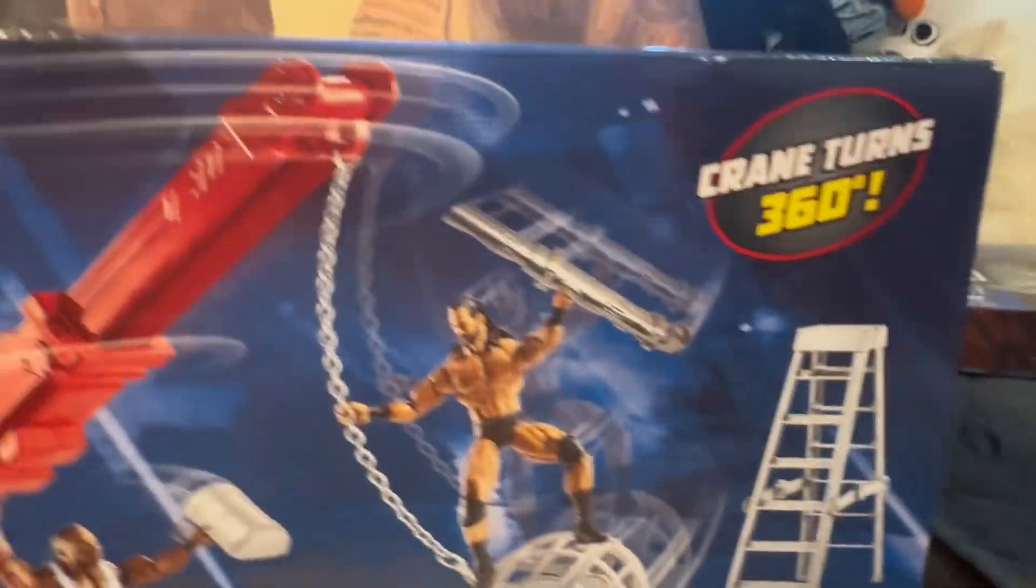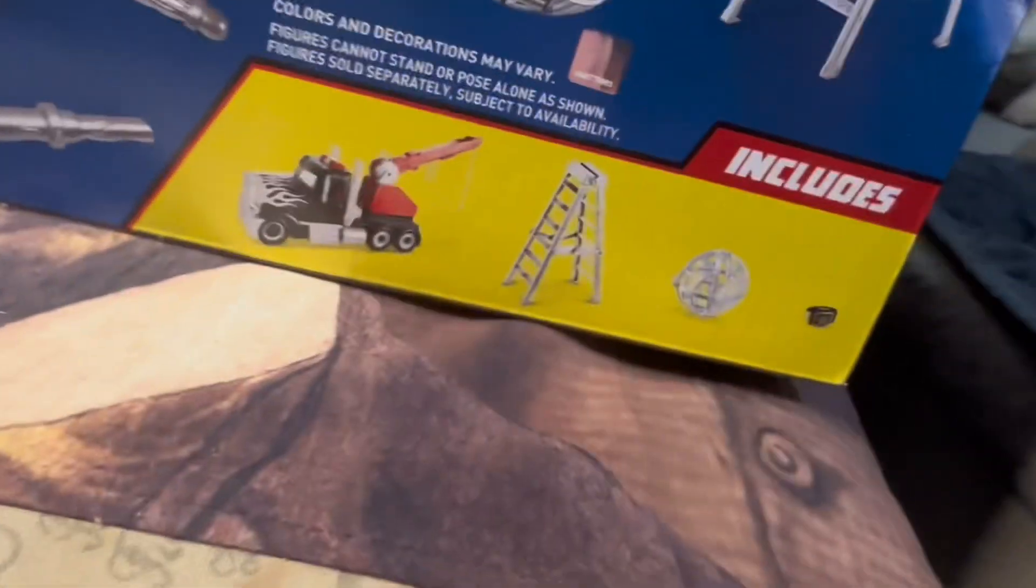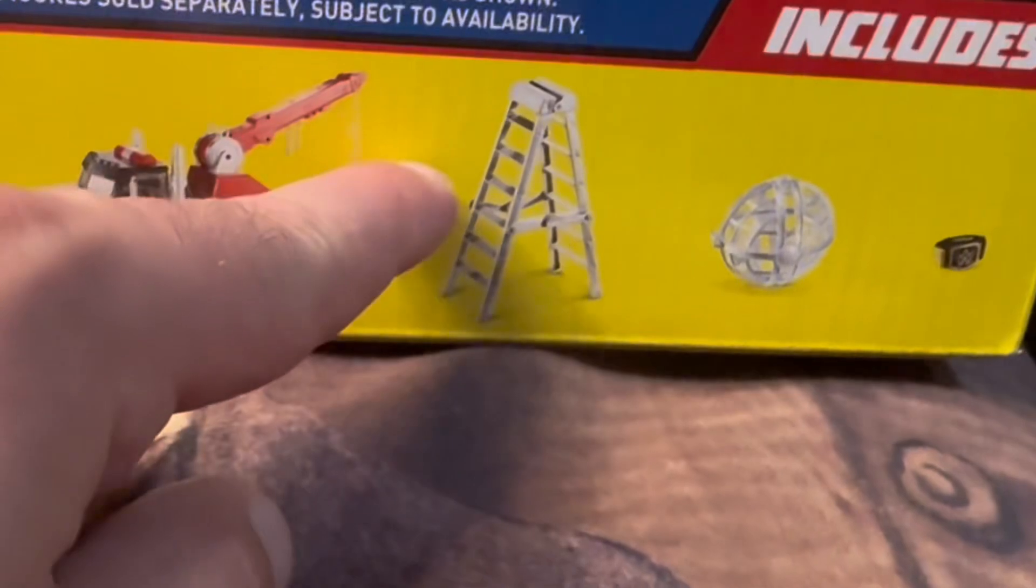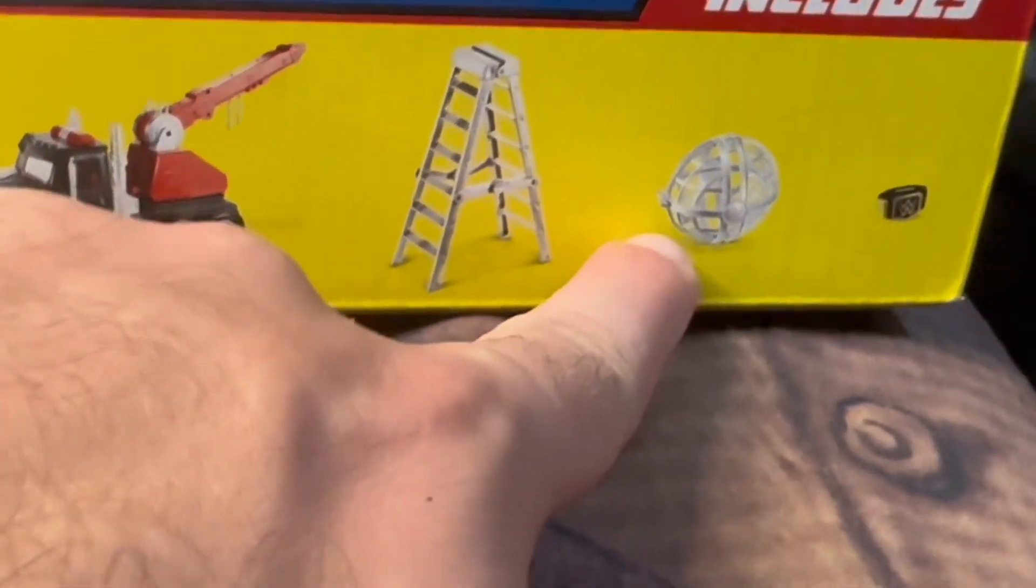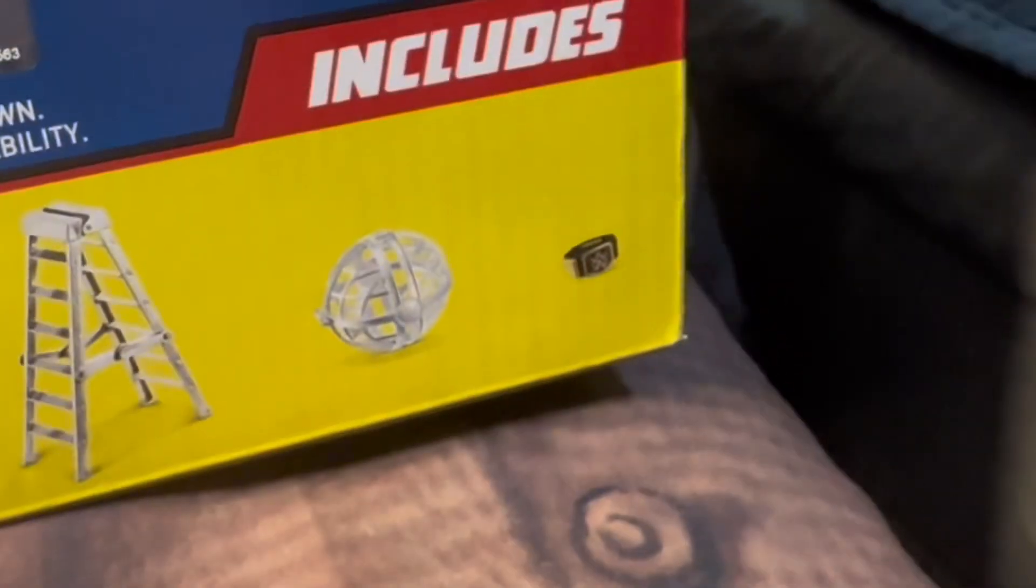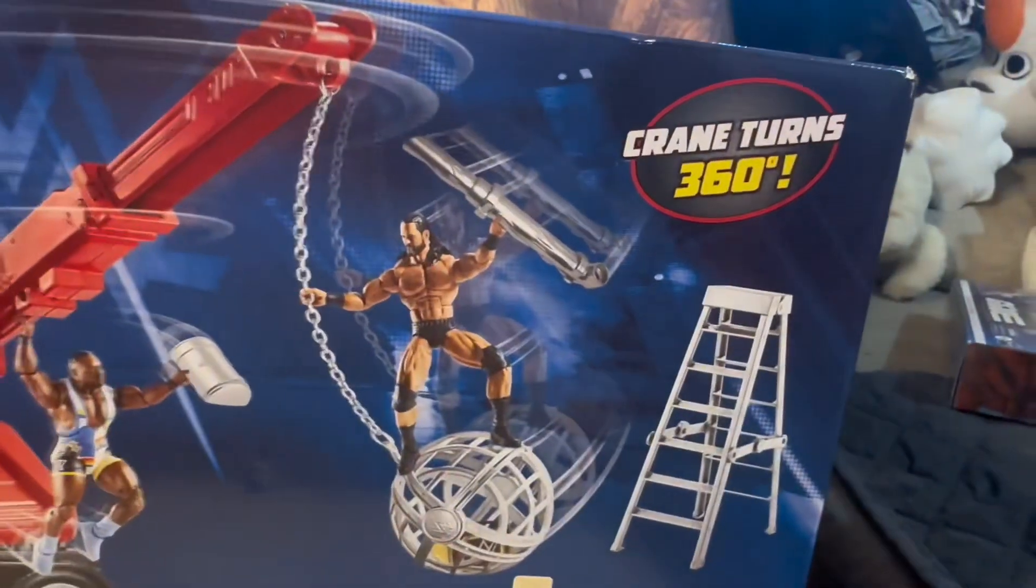More Drew McIntyre action. You got your wrecking ball. This thing may come with a ladder. Holy shit, it does come with a ladder! That's awesome. So you get the big rig, you get the ladder, you get the ball, and you do get the championship belt. And the crane turns 360.